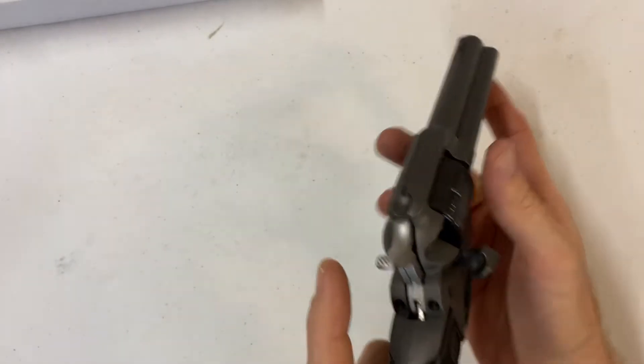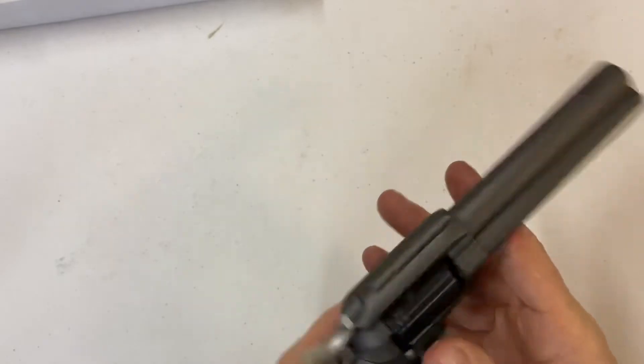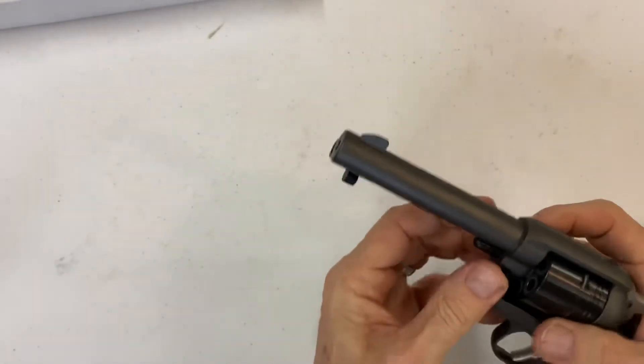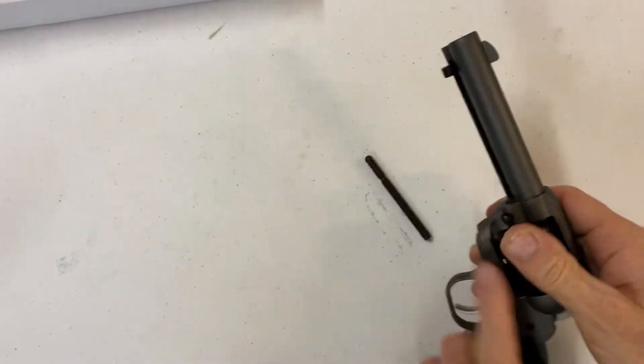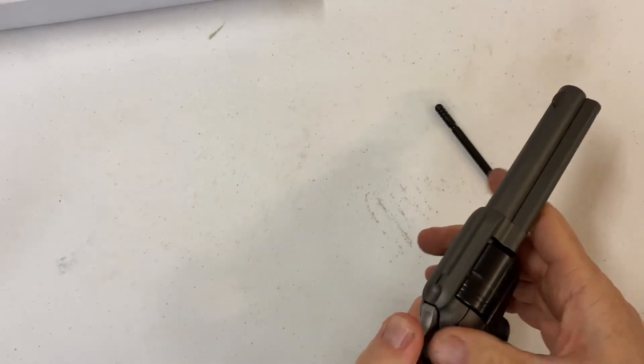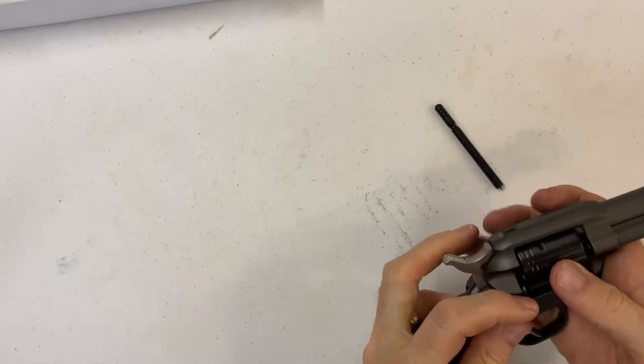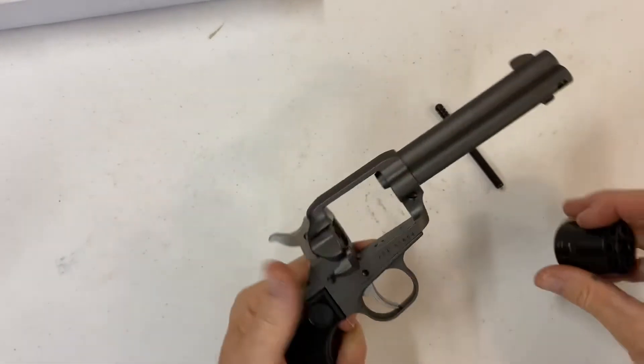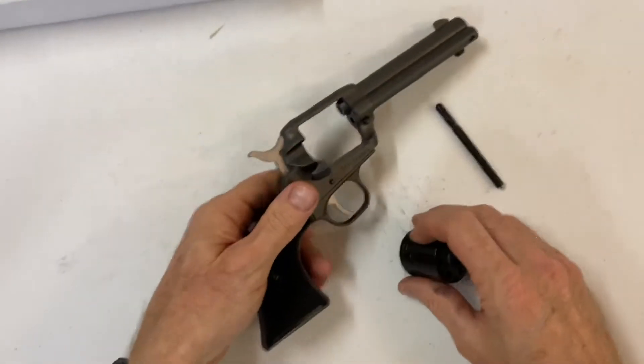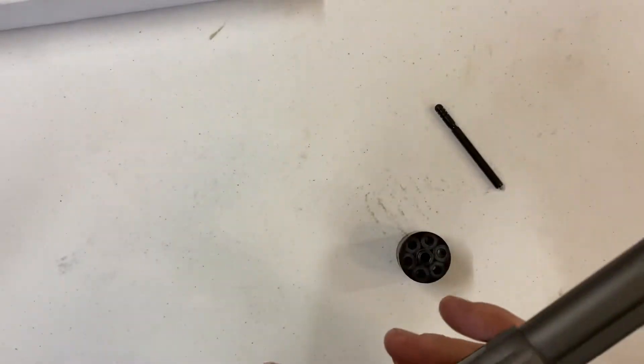To take it apart or take the cylinder out, you just pull the button here, pull it out, and she'll pull right out. Basically, that's pretty much disassembled for the most part.